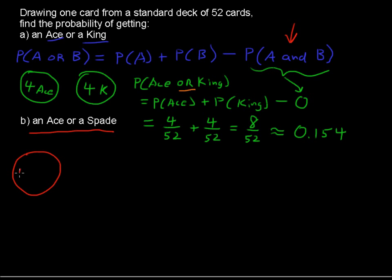So we have, again, four aces, and we have 13 spades. That's in a standard deck. And we have this overlapping. We're not going to count that overlapping twice. That's our AND, and that's why we subtract that.